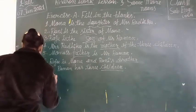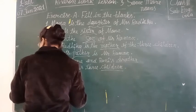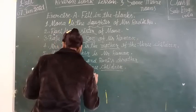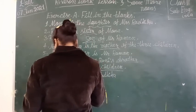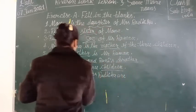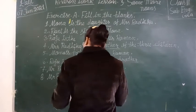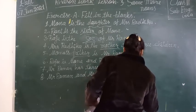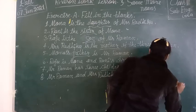Eight. Mr. Raman and Mr. Radhika are blank and blank. Yeh dono aapas mein kya lagte hain? Mr. Raman and Mr. Radhika yeh dono husband and wife lagte hain. Yahan par likhenge husband and wife.